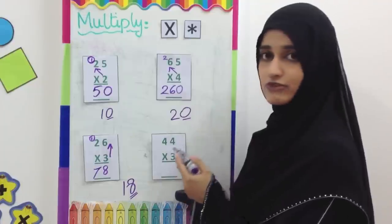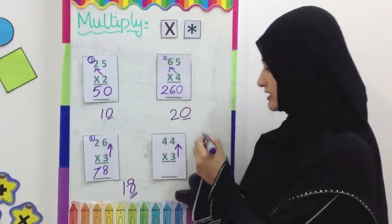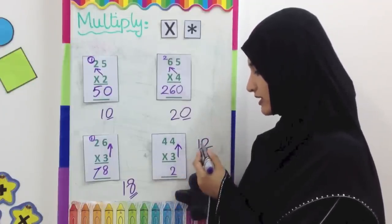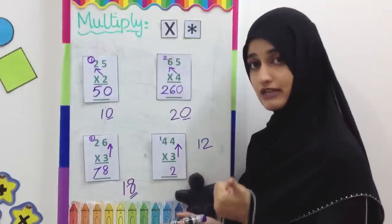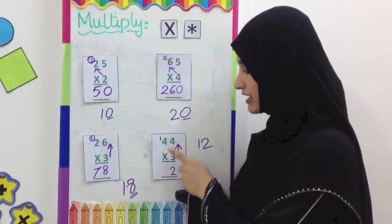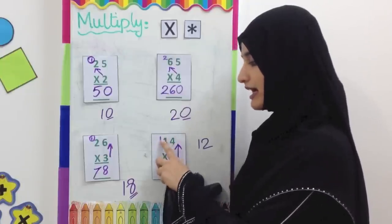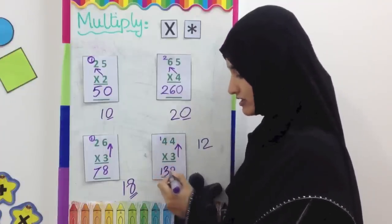The last one here is 44 multiplied by 3. First of all, we are going to multiply 3 and 4 together. The answer is 12. The 2 is written here. The 1 is carried on the top. Now we are going to first multiply and then we are going to add. Multiply 3 and 2 together. 3 2's are 6. Add this one. The answer is 7, so we get 72. Actually, 3 4's are 12. Add this one. Answer is 13. 132.